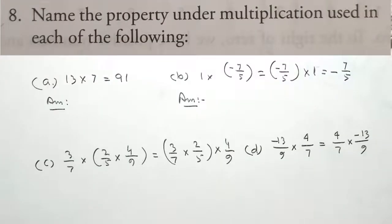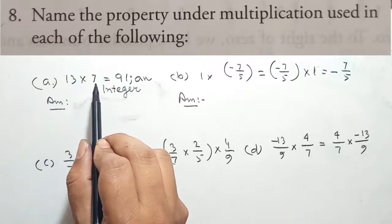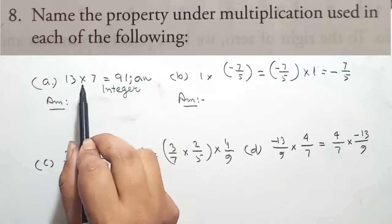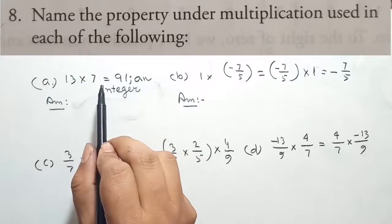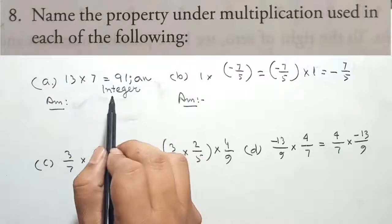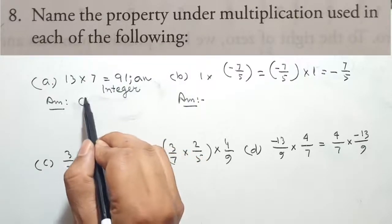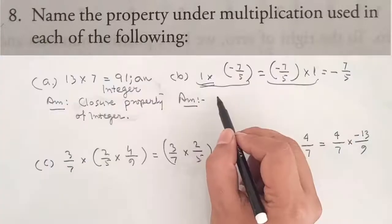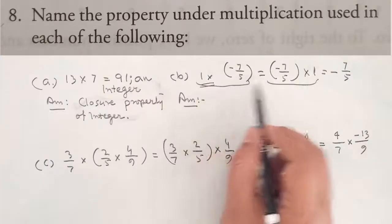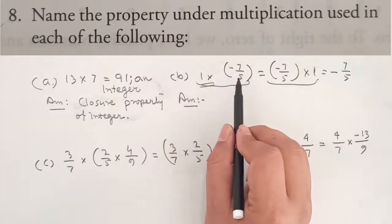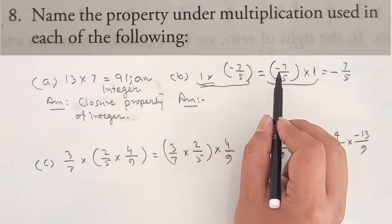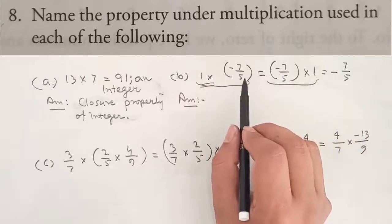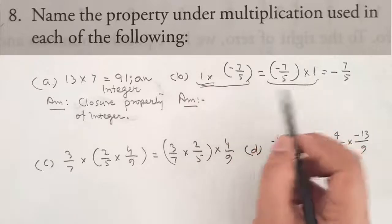Name the property under multiplication used in each of the following. When we write the product of two rational numbers, we use the closure property of integers. When we see the number 1 involved in multiplication, we use the multiplicative identity for rational numbers.